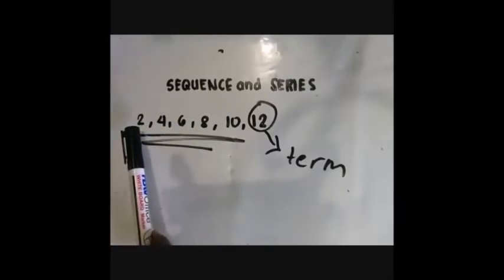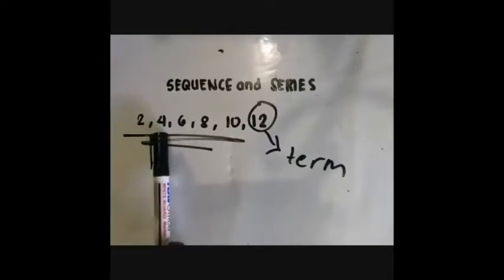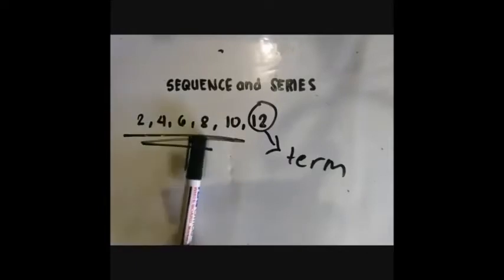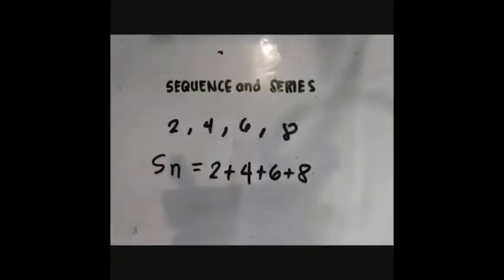Suppose I have here a list of numbers: 2, 4, 6, 8. This is called a sequence. But when I write it as S of N equals 2 plus 4 plus 6 plus 8, this will now then be called a series.